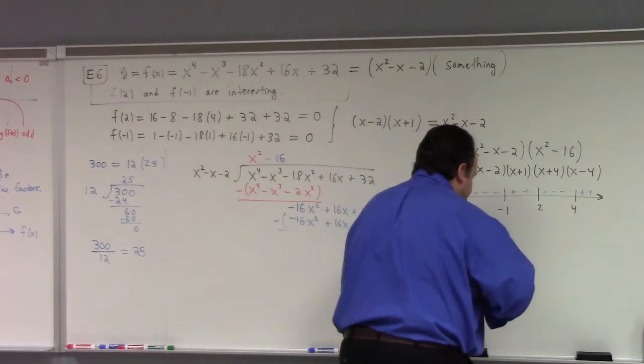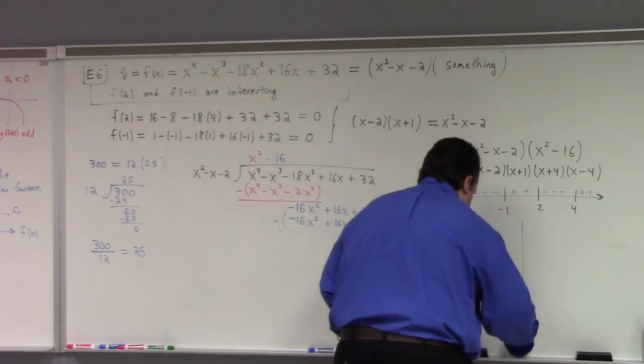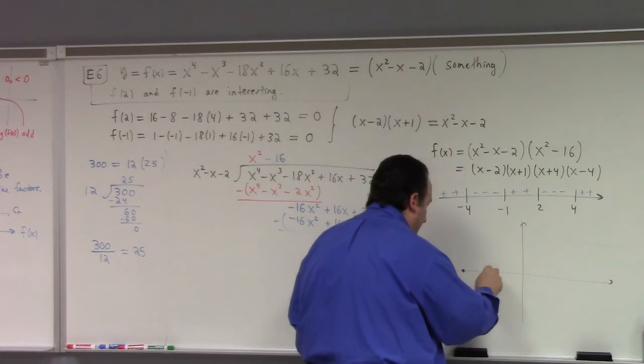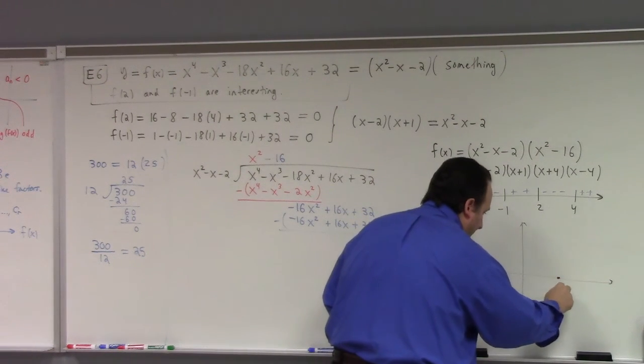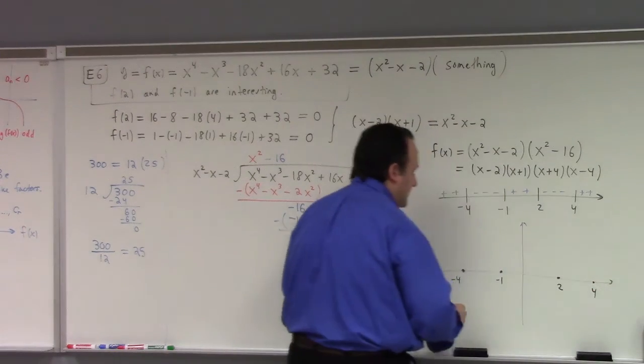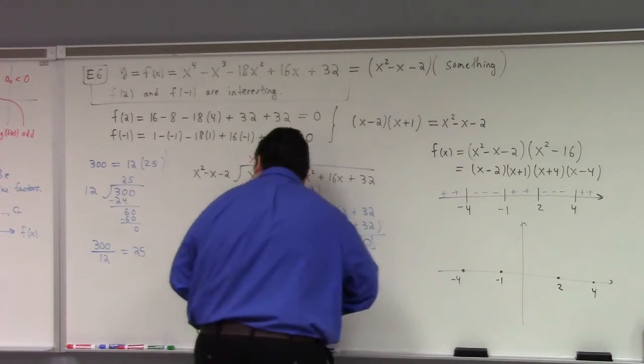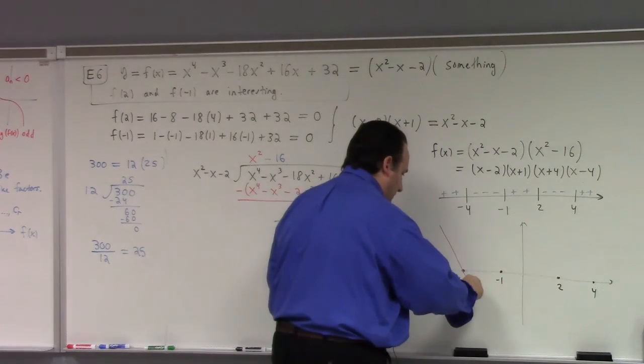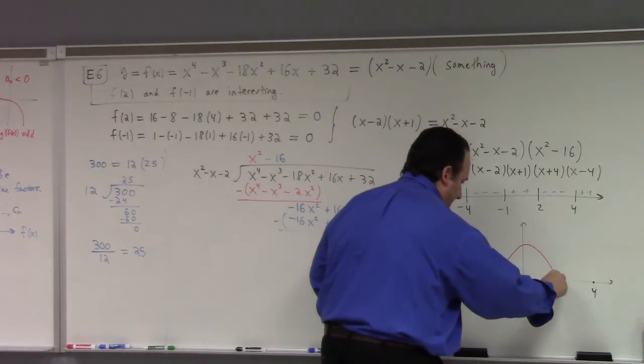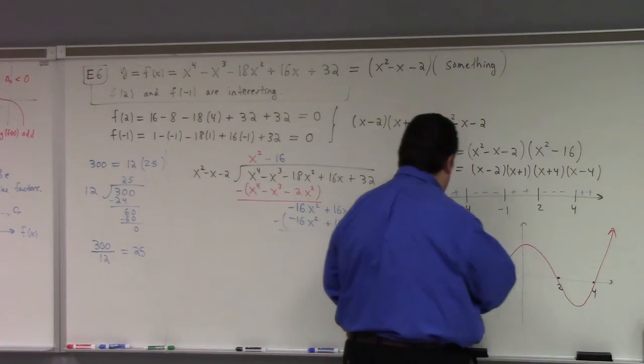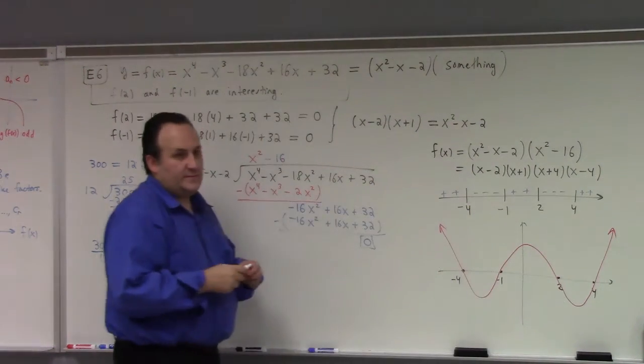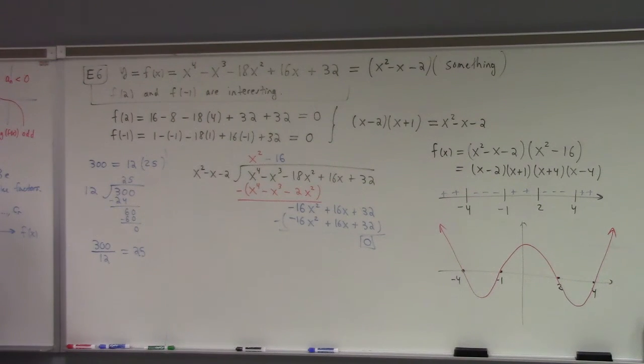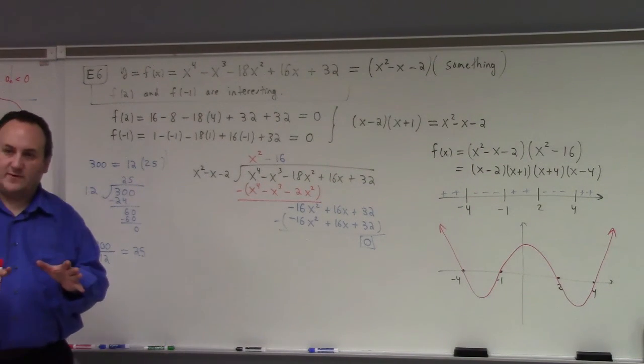So, the graph looks like, looks like what? Whee! Like that. There you go, there's the graph y equals f of x. This, obviously, was harder than the other examples today. Why?